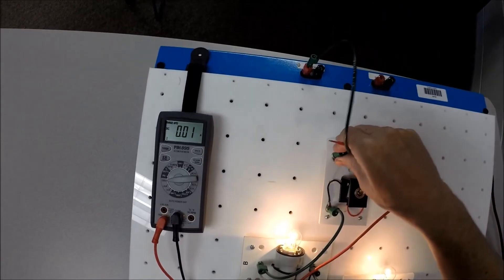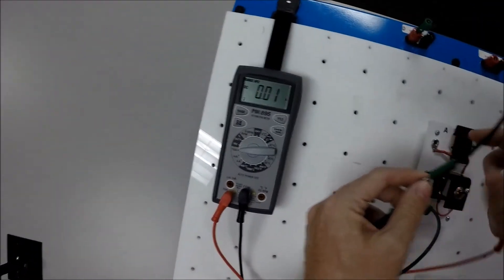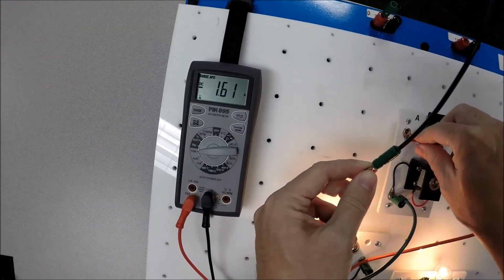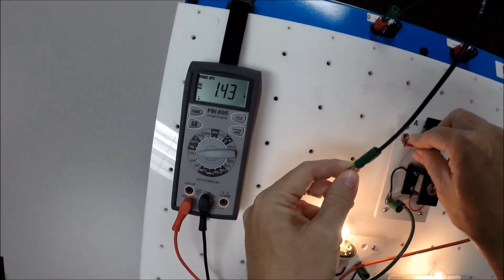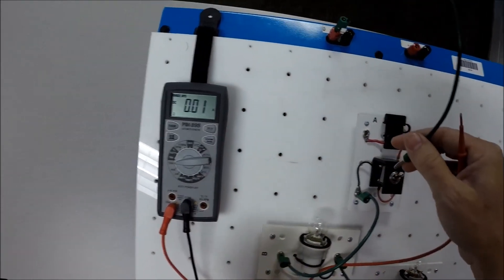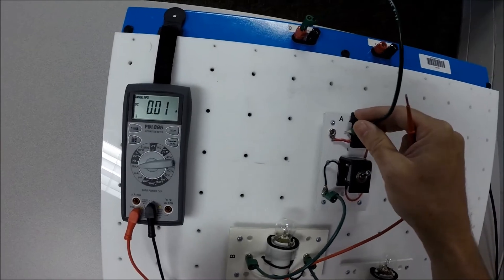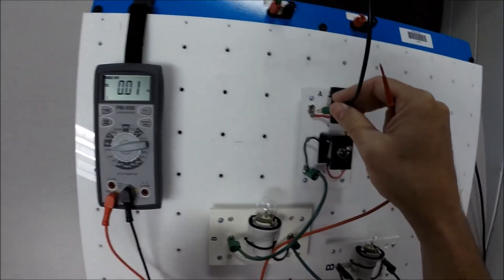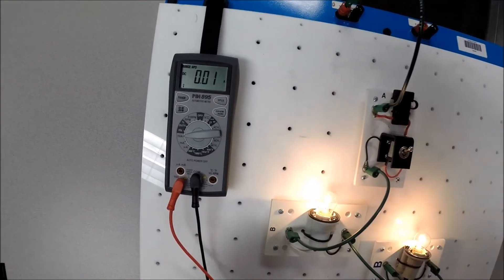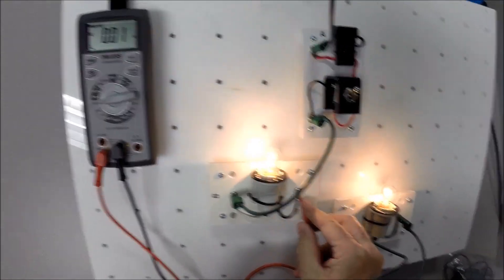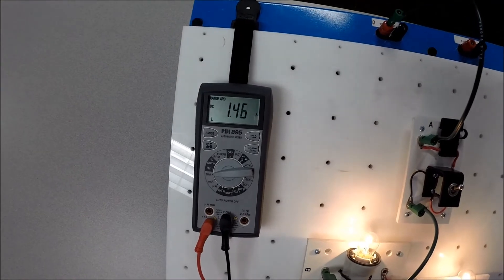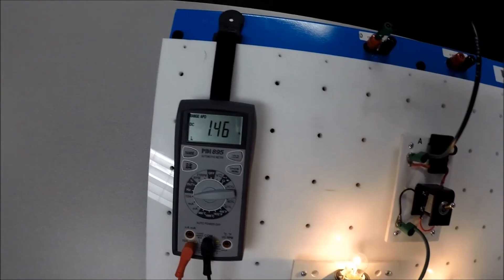How about right up here going into the fuse? 1.4443 amps. It's all the same. The difference between 1.43 and 1.46 is negligible, so we're not going to worry about that. We just want to see that if we go here between the two bulbs. Same again. 1.46 amps.